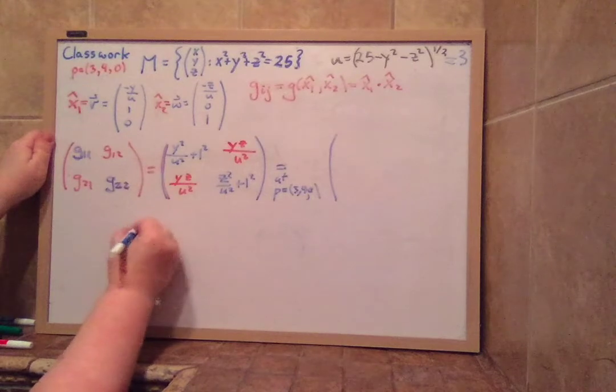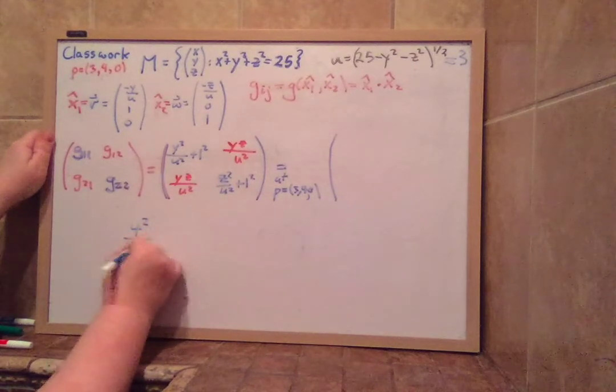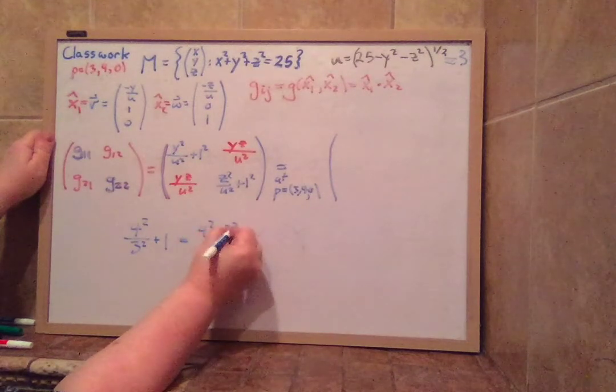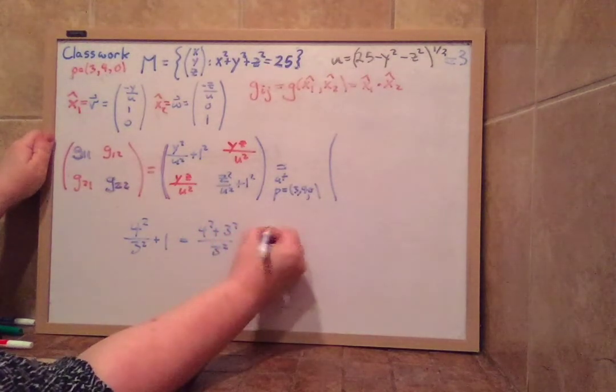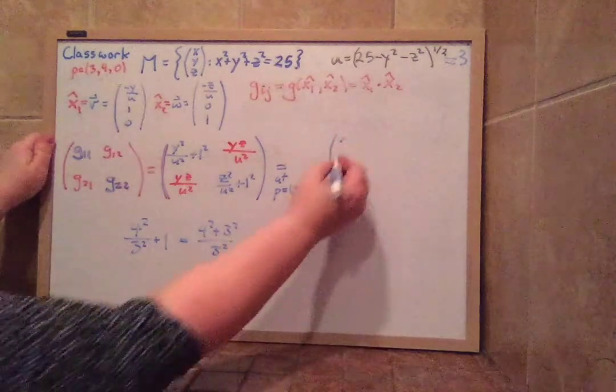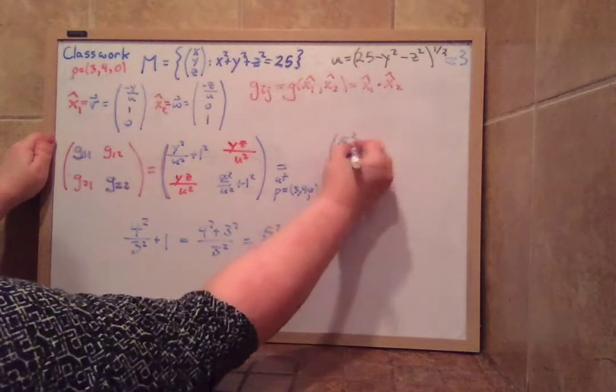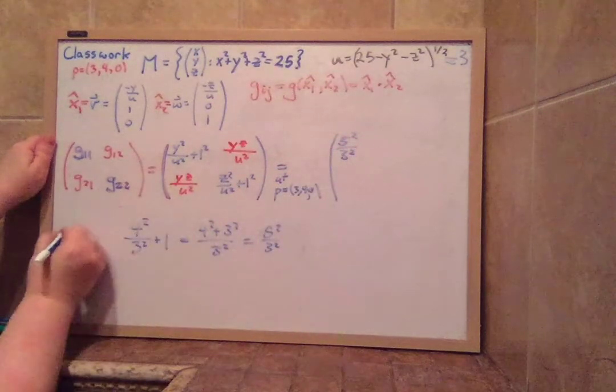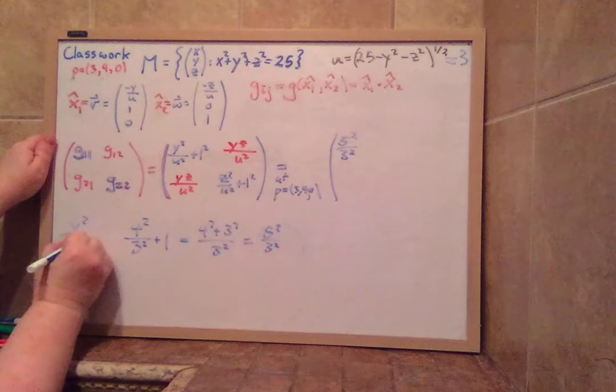So we have y is 4 squared over 3 squared plus 1. 4 squared over 3 squared plus 1 is the same as 4 squared plus 3 squared over 3 squared. But that's equal to 5 squared over 3 squared. So this is 5 squared over 3 squared. This is the first entry, the y squared over u squared plus 1.